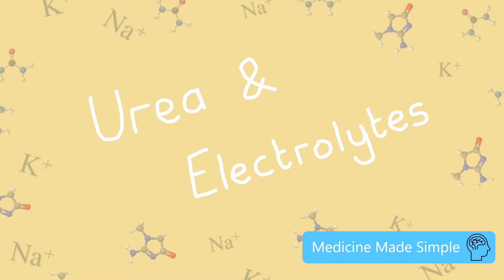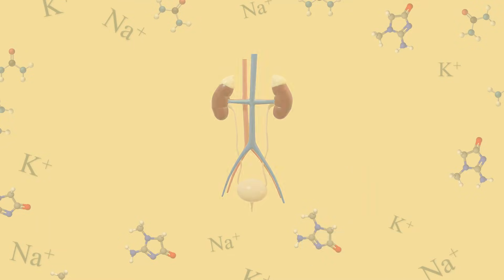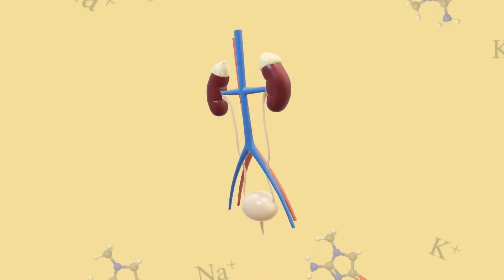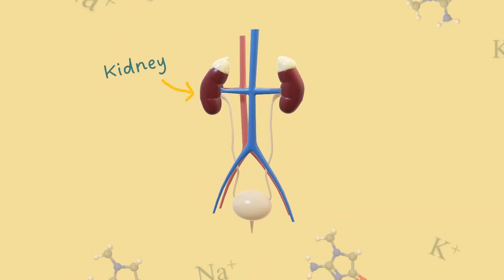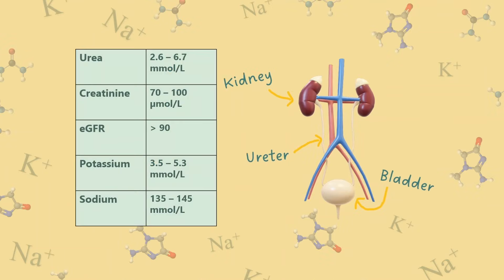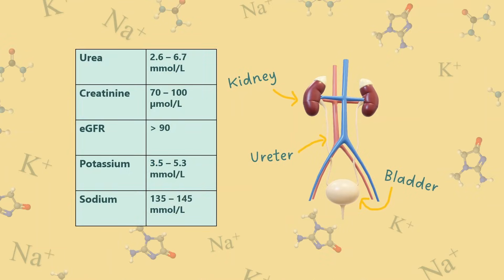Welcome to this video on urea and electrolytes blood test interpretation. U&Es is essentially a blood test aimed at analysing kidney function. Its main components are urea, creatinine, estimated glomerular filtration rate, potassium and sodium. Let's have a look at these in more detail.